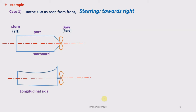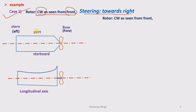Now we will find out the effect of gyroscopic torque on the ship. As an example, I have taken the case where the rotor rotates clockwise as seen from the front side, and the ship is steering towards right. We need to look at the rotor from the front side to observe its direction. The rotor is rotating clockwise as seen from the front side.